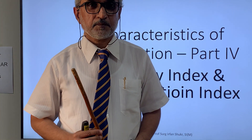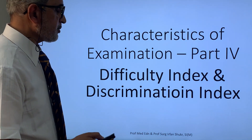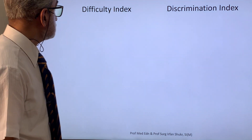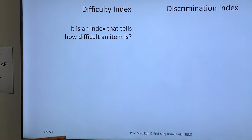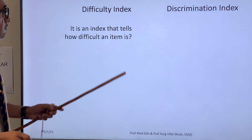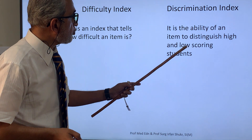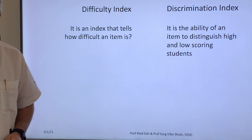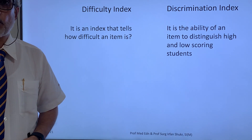Assalamu alaikum and good morning. Today we are going to talk about difficulty index and discrimination index. The difficulty index tells how difficult an item is — meaning how difficult a question is. The discrimination index is the ability of an item to distinguish high and low scoring students: can this question distinguish between those students who are scoring high and those who are scoring low?